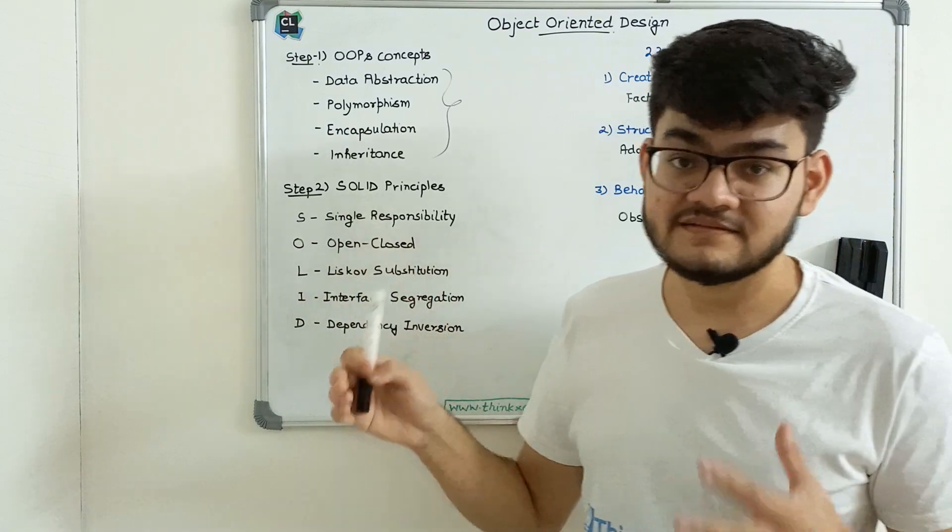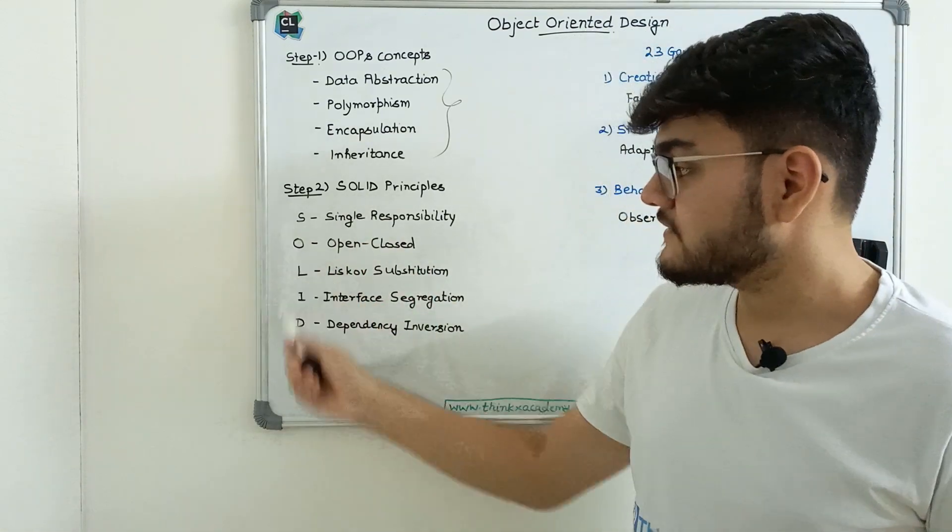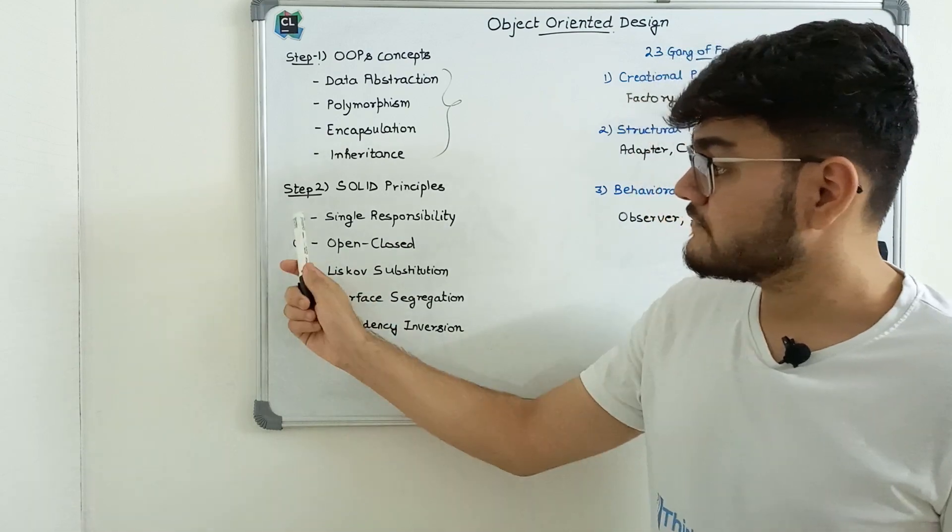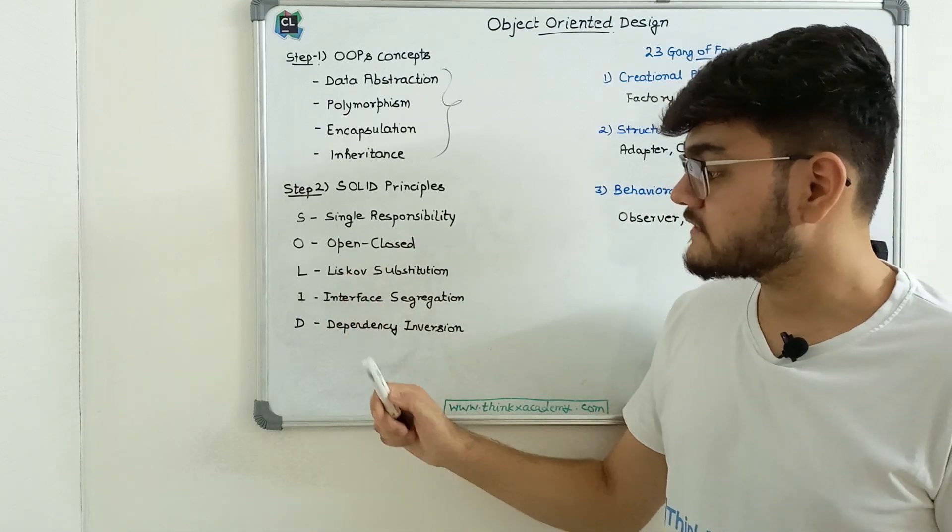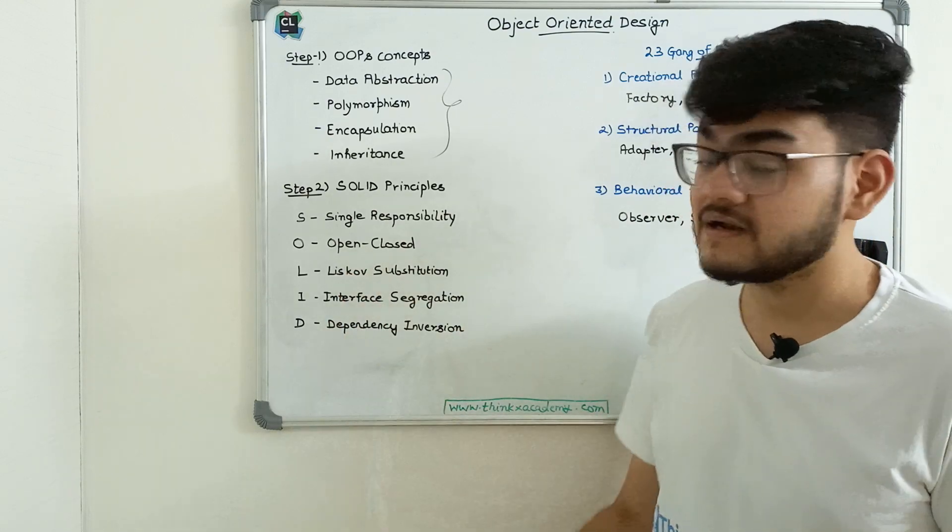SOLID is an acronym for S-O-L-I-D. The first principle is Single Responsibility Principle, then Open-Closed, Liskov Substitution, Interface Segregation, and Dependency Inversion.